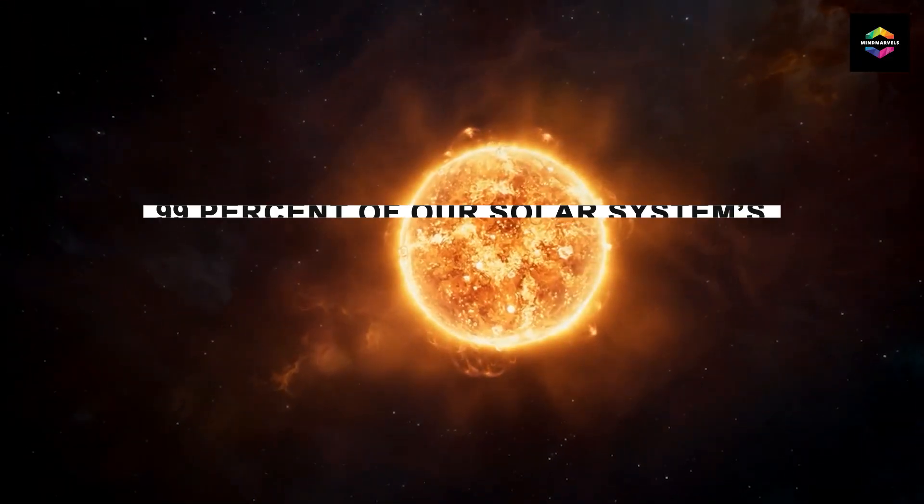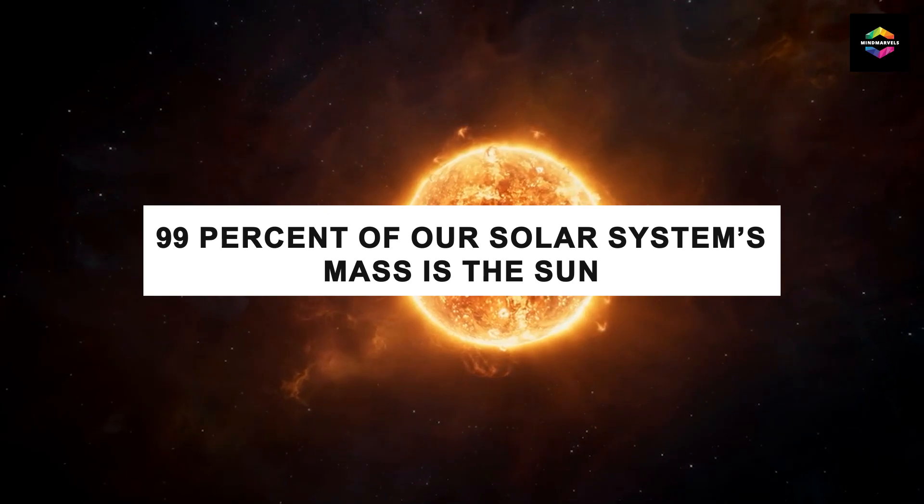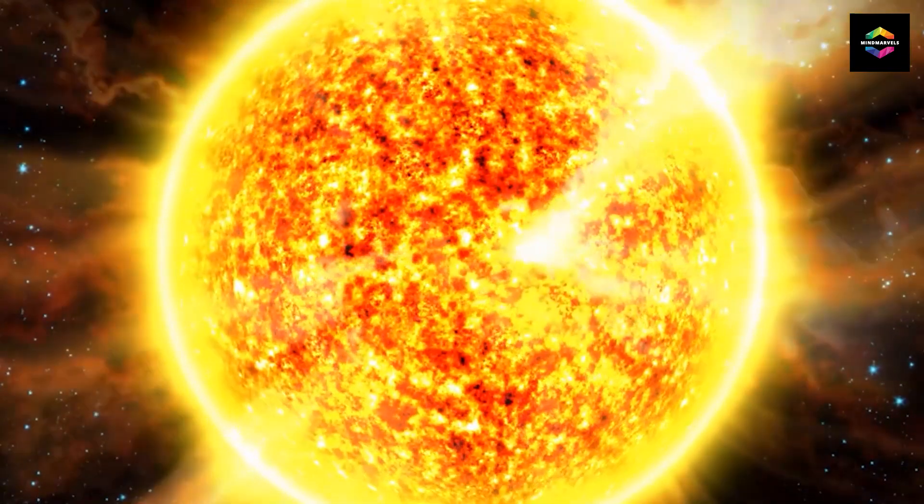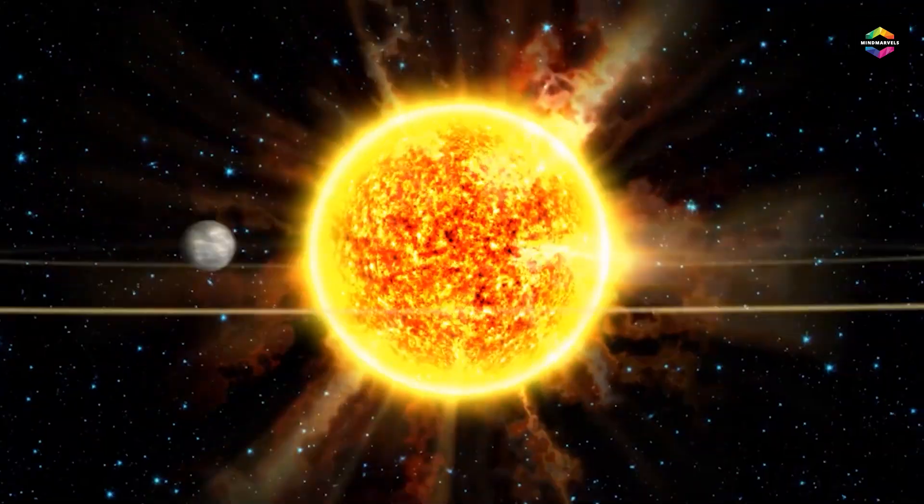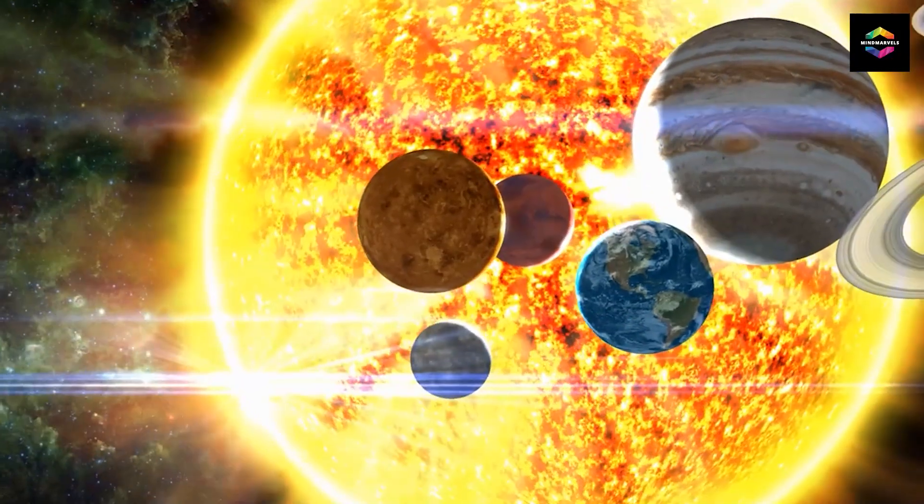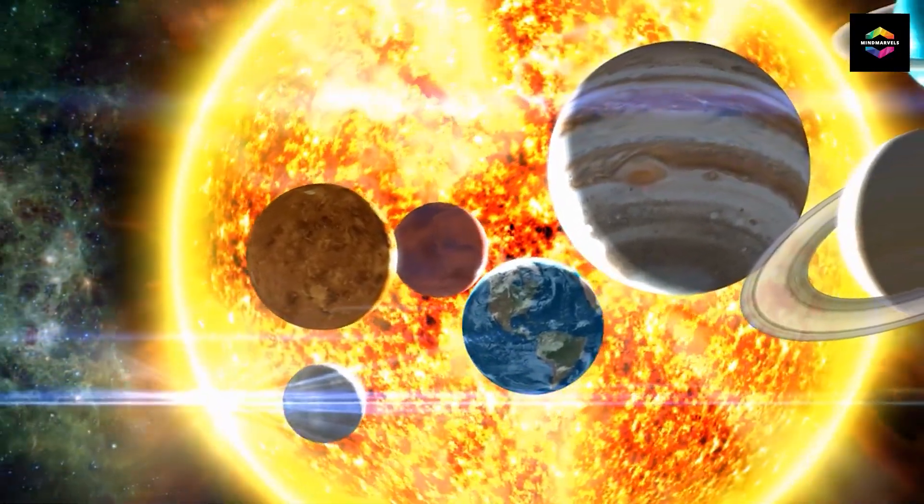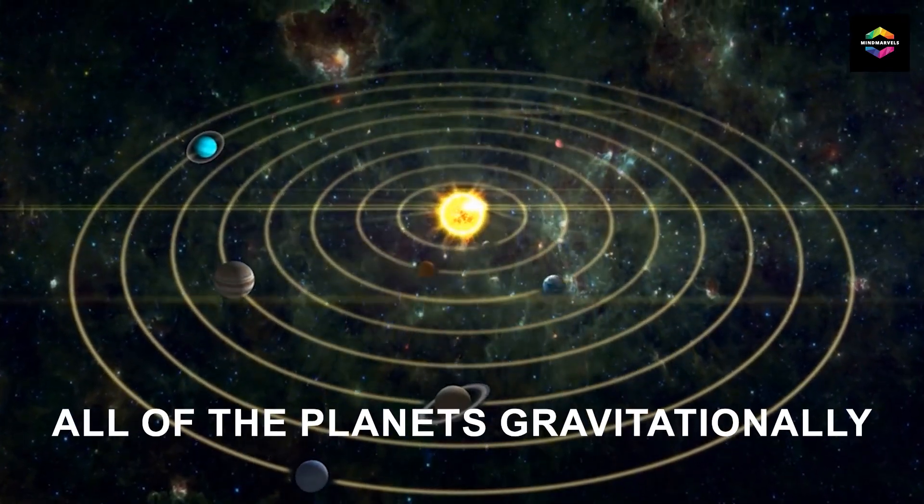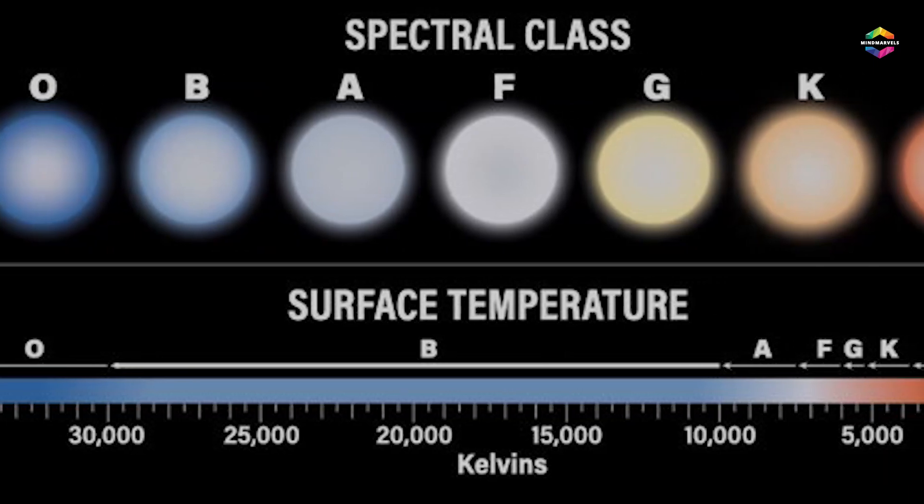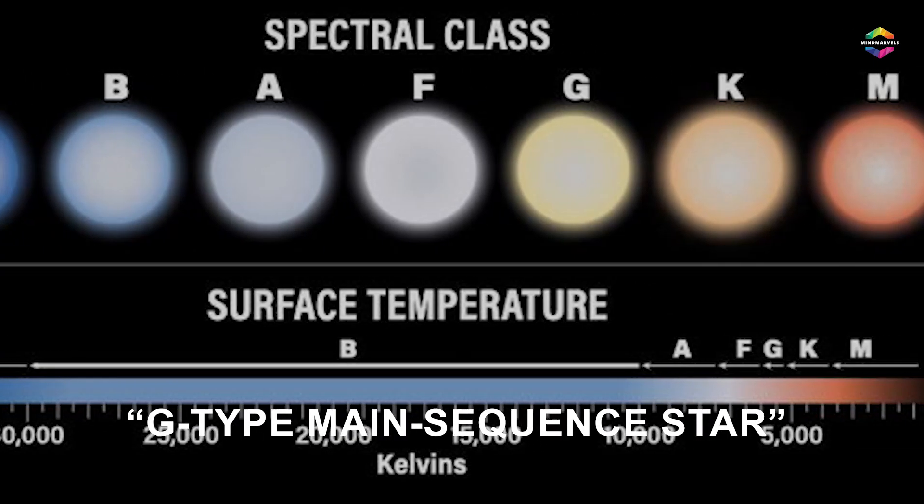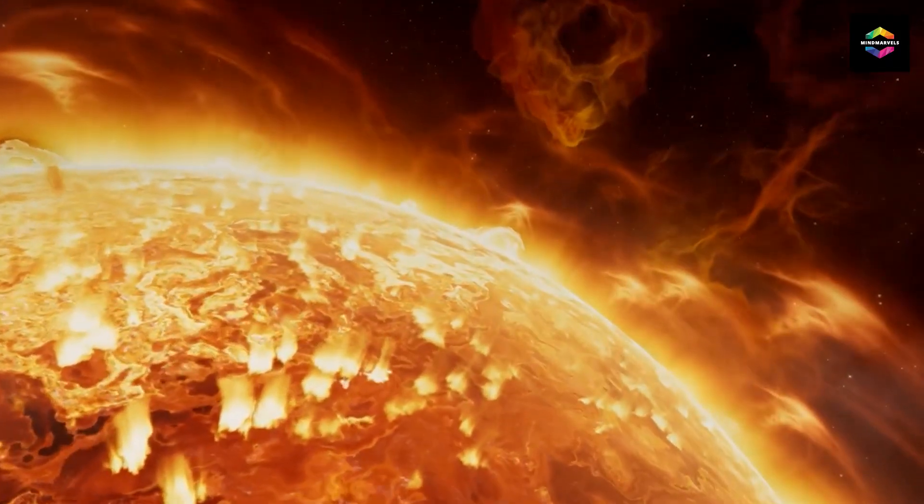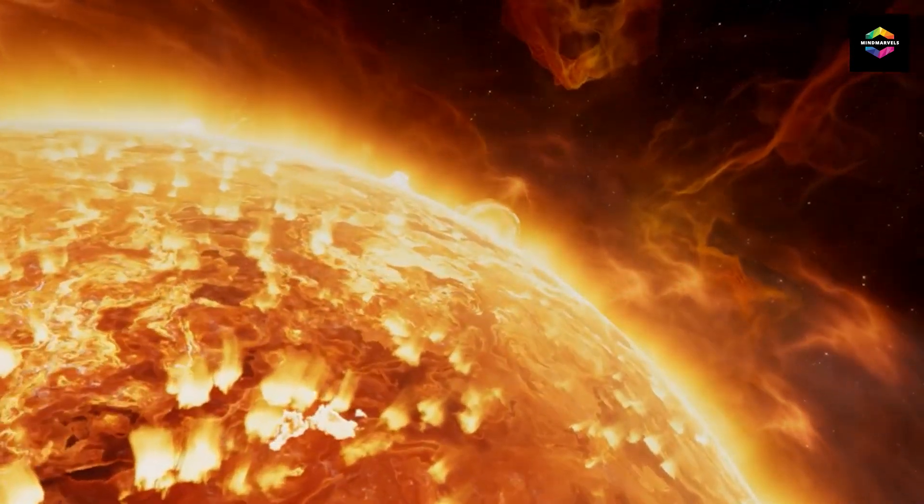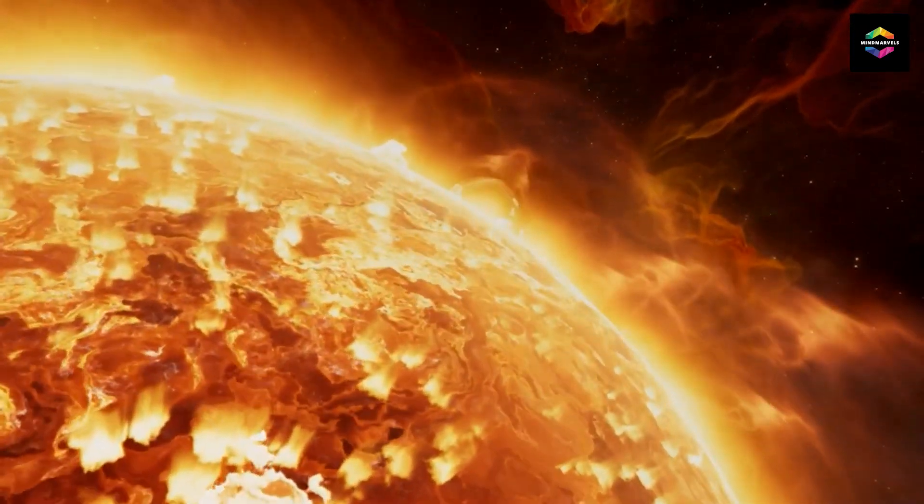Number five, 99% of our solar system's mass is the sun. Because of its immense size, our star, the sun, accounts for an astounding 99% of the mass in our solar system. That's what allows it to dominate all of the planets gravitationally. According to its classification as a G-type main sequence star, our sun converts over 600 million tons of hydrogen into helium per second.